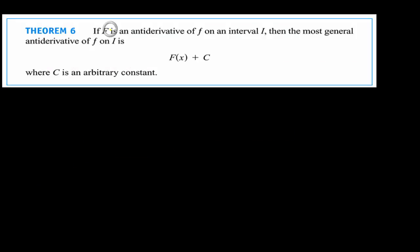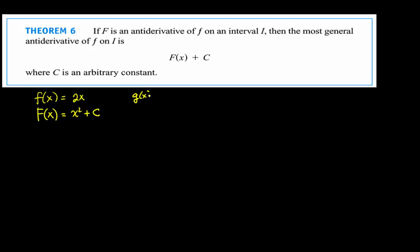Theorem 6: if capital F of x is an antiderivative of little f on an interval I, then the most general antiderivative of f on I is capital F of x plus the arbitrary constant C. So if f of x equals 2x, then capital F of x is x squared plus C. If g of x equals 3x squared, then capital G of x is x cubed plus C, because its derivative is 3x squared.